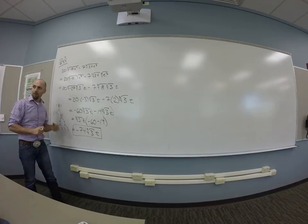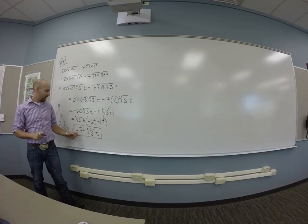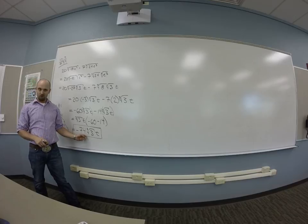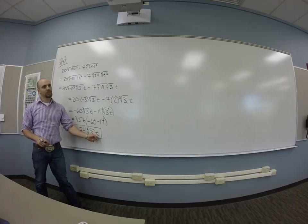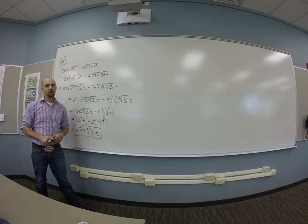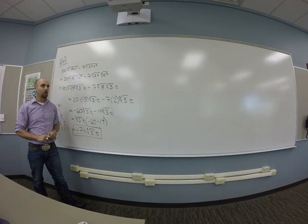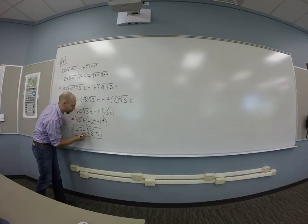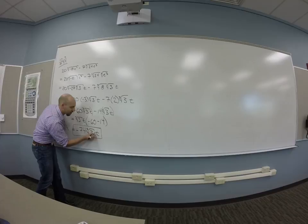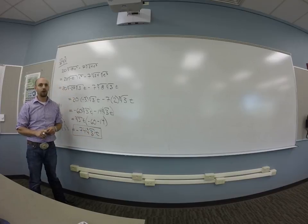And I usually put my answers in kind of honest, like whole number, right, integer parts, and then ruddy parts, and then variable parts. But you guys can arrange them however you want. If you do choose some other arrangement, I would make clear which things you're multiplying. Cool.